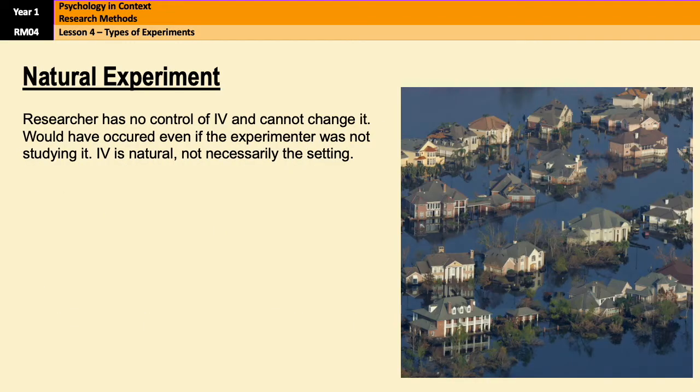Alright, moving on to our final type of experiment, that is the natural experiment. In a natural experiment, the researcher takes advantage of something that is already happening or has happened. The IV is something that can't be controlled or changed and it's something that would have occurred or would have been going on, whether the experimenter was there to study it or not. So something like a natural disaster, let's say. The term natural, therefore, refers to the fact that the IV is naturally occurring, not the fact that the setting of the research is natural.